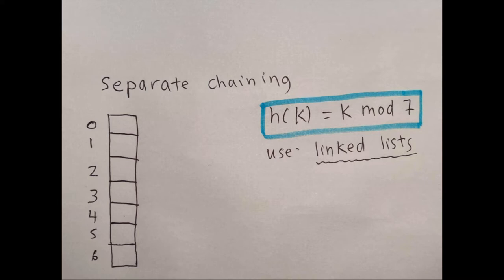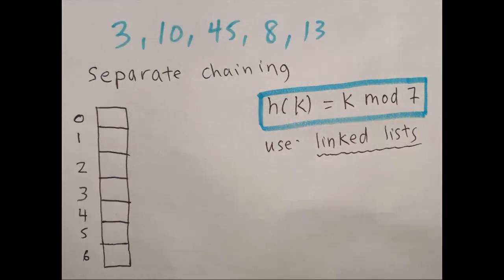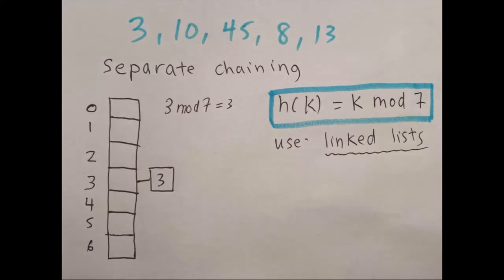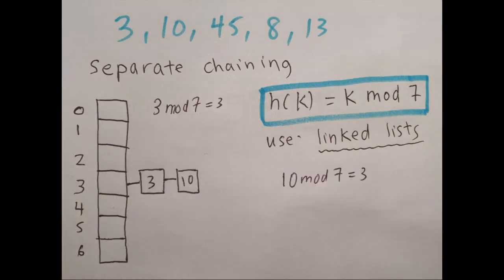We have a hash function which is k mod 7. We have keys 3, 10, 45, 8, and 13. We start by doing 3 mod 7, which is 3, and we put that at index 3. Next we do 10 mod 7, which is also 3. Because of separate chaining we just continue the linked list, so we put 10 at index 3 as well.